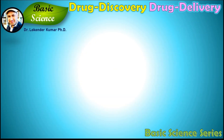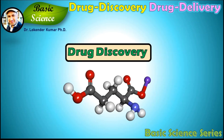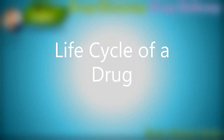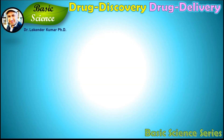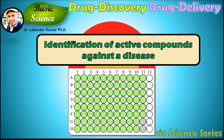Let's start with the first part — drug discovery. We will discuss the life cycle of a drug. The life cycle of a drug includes four distinct stages. Stage one includes the primary assay development for drug discovery, which includes target identification and assay validation, high throughput screening of compounds, as well as hit validation and potency estimation. In brief, this stage includes the identification of active compounds against a particular disease.